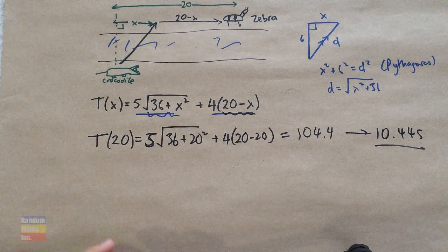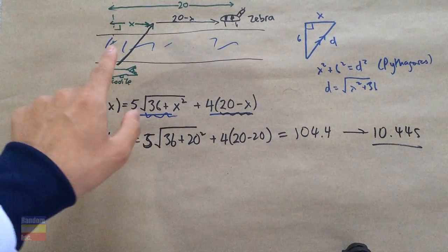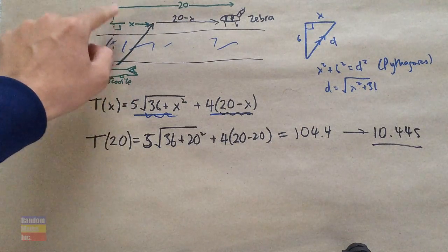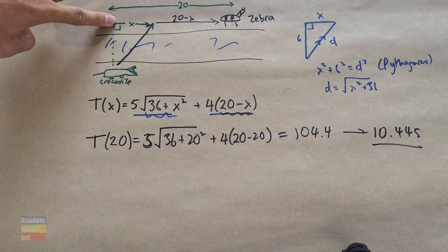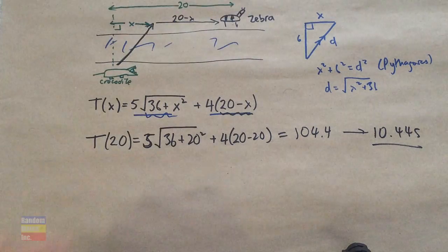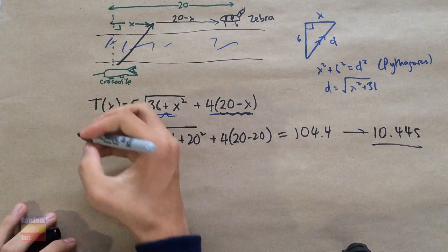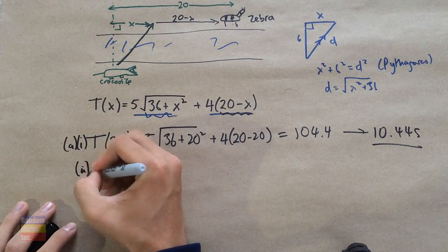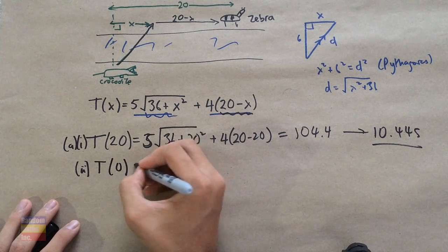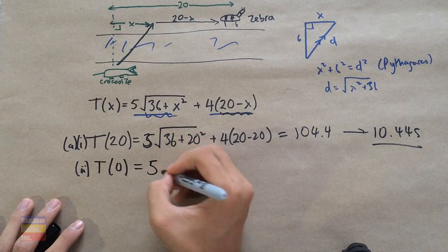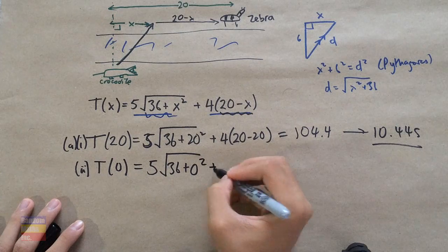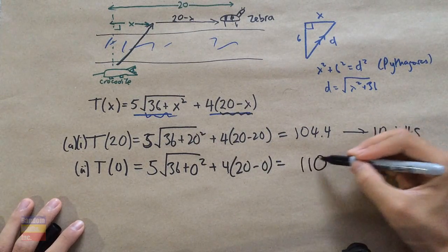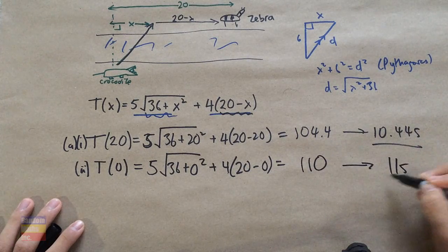Now when it simply travels the minimal distance in water — straight across — that means X equals 0, so it travels all 20 meters on land. Plugging X equals 0 into the equation: T of 0 equals 5 times the square root of 36 plus 0 squared, plus 4 times 20 minus 0. Plugging it into the calculator gives you 110, which represents 11 seconds.